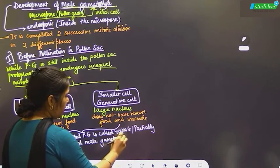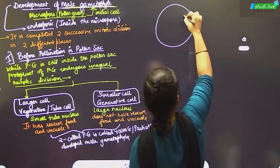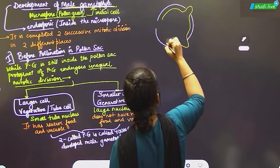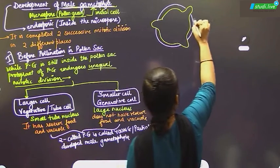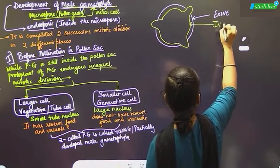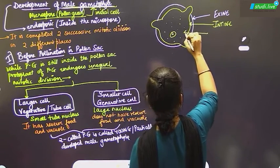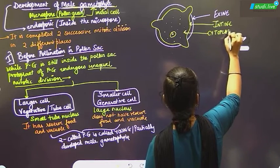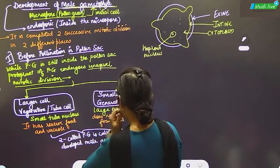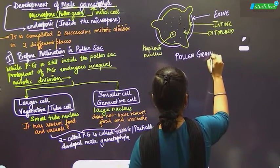Let us see how we draw this in the answer. We will draw two diagrams. First, draw a circle with eraser rubbings at three germ pore positions. Then draw the intine as the inner layer and the exine as the outer layer. Inside we have cytoplasm and the haploid nucleus. This is the diagram for the pollen grain.